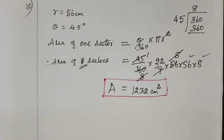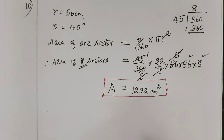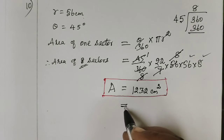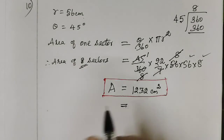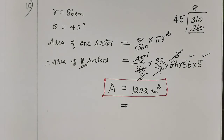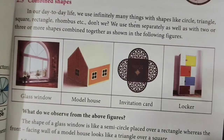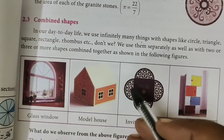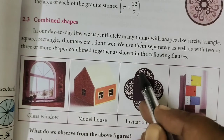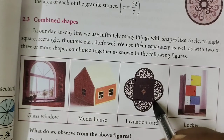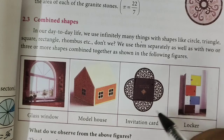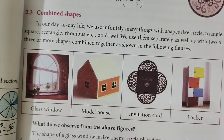We will see the next one. Exercise 2.1 will cover combined shapes. A combined shape consists of one shape such as a semicircle joined with another shape such as a square. This is the next class topic: combined shapes.